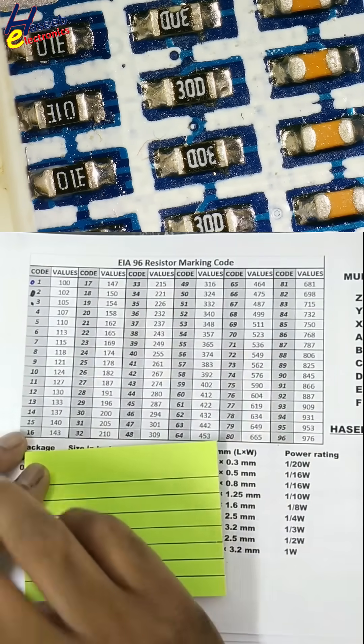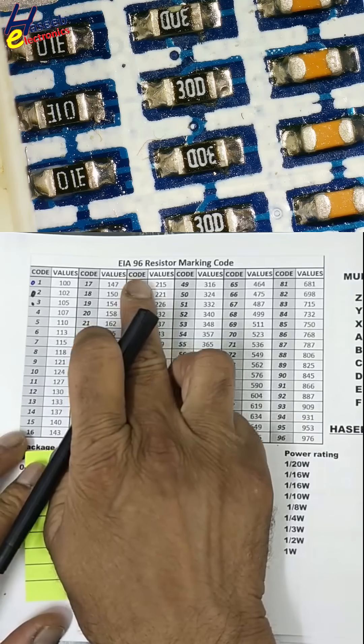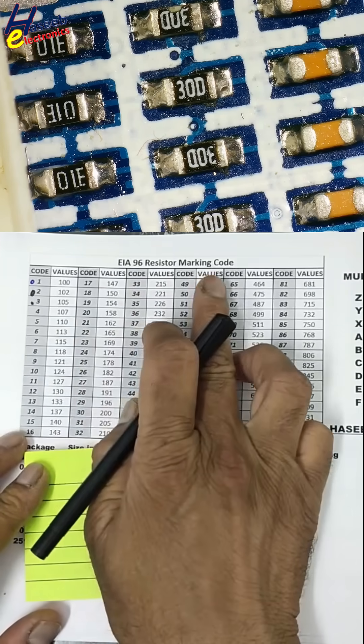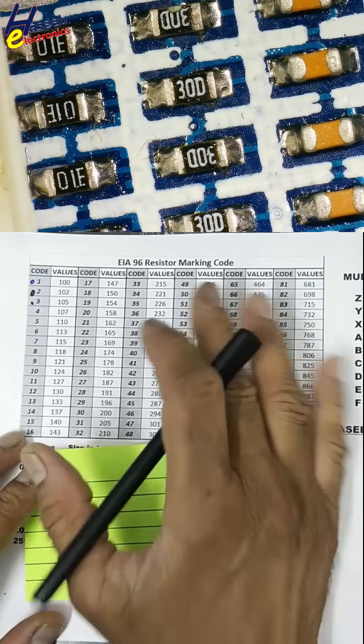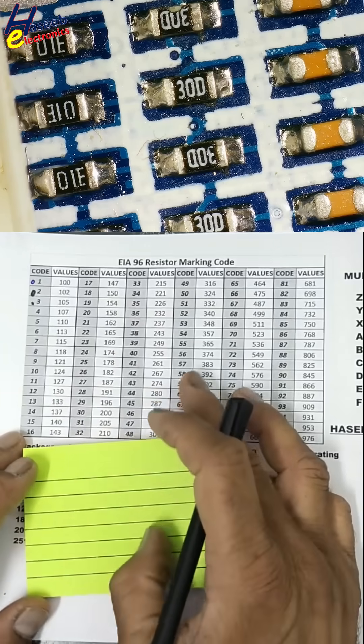To check the value of this resistor, we need EIA96 resistor marking code chart. You can download. The link is present in the video description.